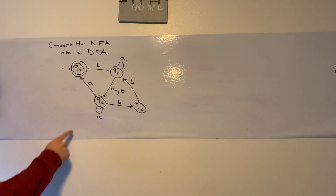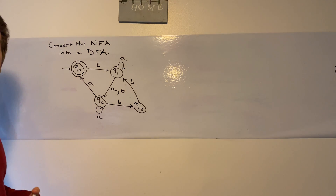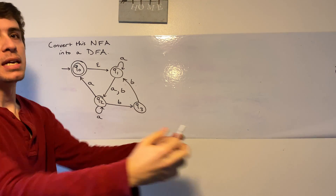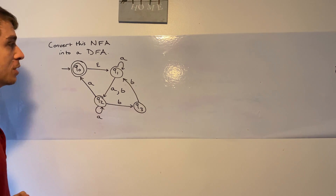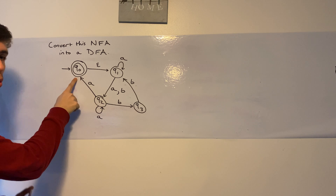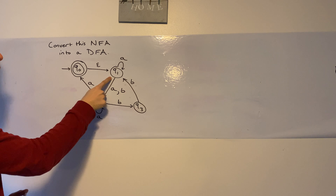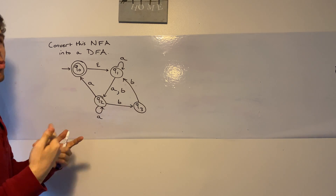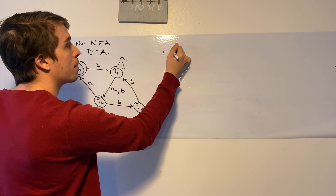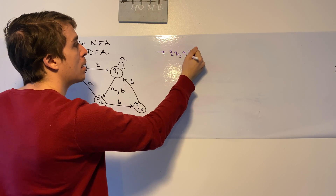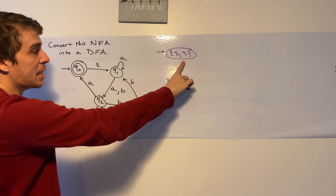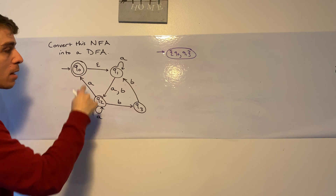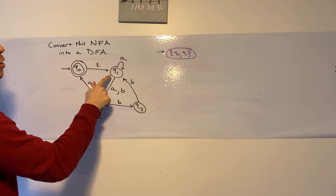Let's get started. The start state is Q0 right here. We have to compute the epsilon closure of that set of states, Q0. Remember that epsilon closure just means every state that you can go to just by following epsilon transitions. So where can we go via only epsilon transitions from Q0? That's Q1. So the epsilon closure says we could either be in Q0 or Q1.